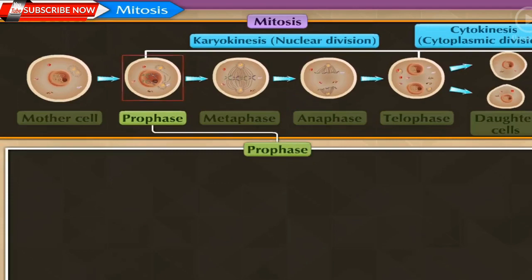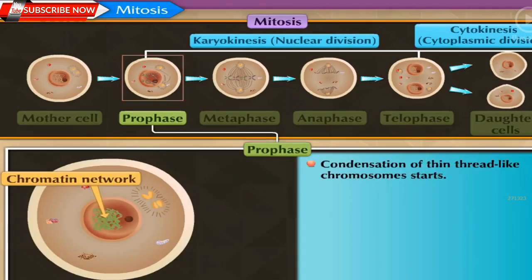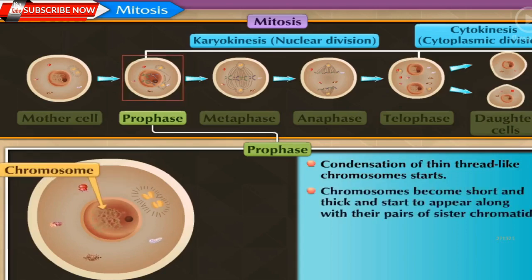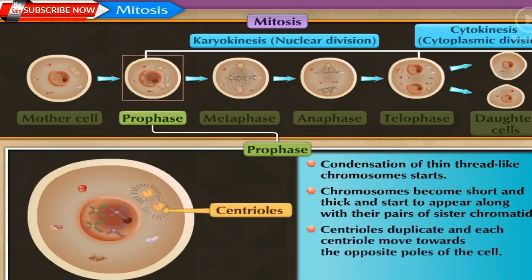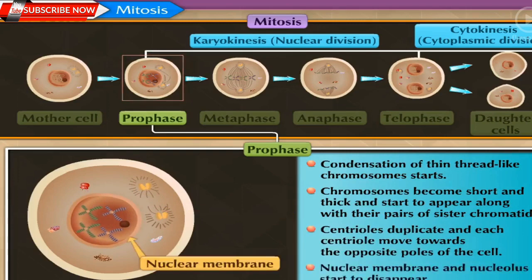In prophase, condensation of thin thread-like chromosomes starts — they become short and thick and appear along with their pairs of sister chromatids. Centrioles duplicate and each centriole moves towards opposite poles of the cell. Simultaneously, the nuclear membrane and nucleolus start to disappear.